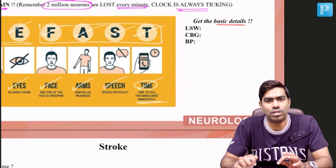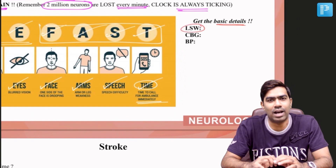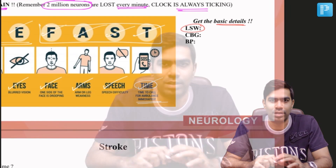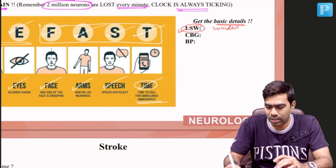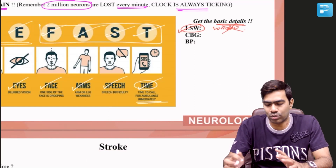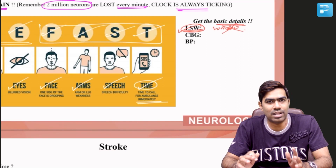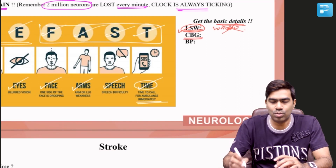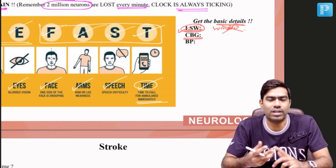By the time you are identifying the stroke, you need to get the basic details done. The most important basic detail is the Last Seen Well time — LSW — which is when the patient's attendants last saw the patient walking and talking normally, or when the patient himself was last confirmed to be normal. Some people call it Last Seen Normal time. Avoid the term 'window period' as it can be misleading.